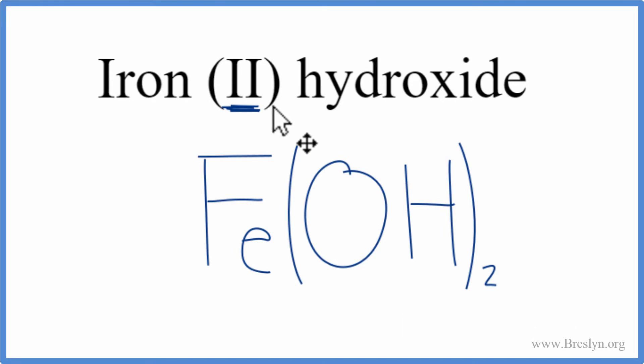So this is the formula for iron (II) hydroxide. Let's check our work real quick. We said iron, that had a 2+ charge because of the Roman numeral, the hydroxide was 1-.